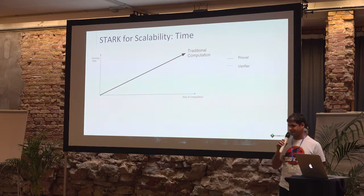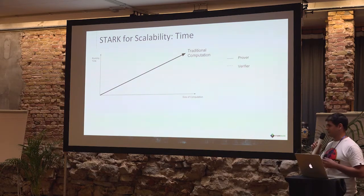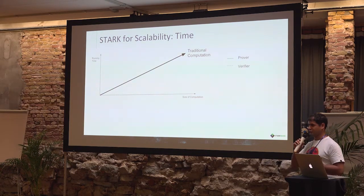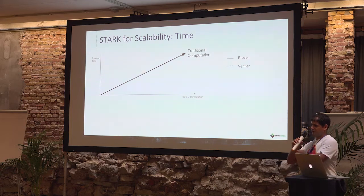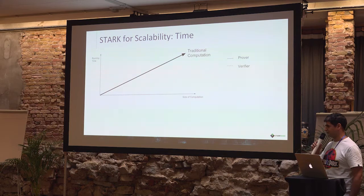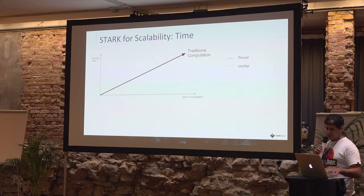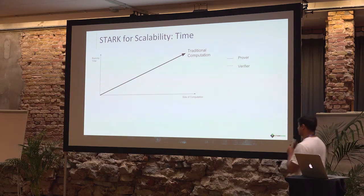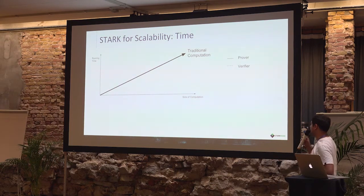This is a simple comparison between three of the more famous zero-knowledge proof systems: SNARK, Bulletproofs, and STARKs. What you see in the graph is basically very simple.